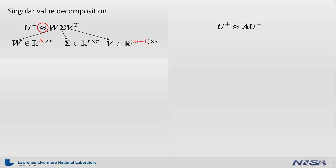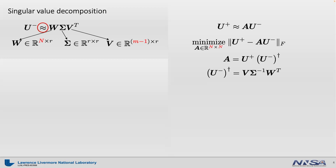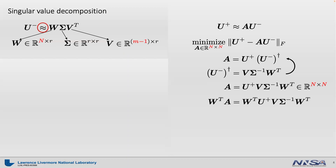Going back to the goal of DMD — that is, U-plus approximated by operator A times U-minus — we find operator A by solving the least squares problem. The solution is U-plus times the pseudo-inverse of U-minus. Since we have the truncated SVD of U-minus, the pseudo-inverse of U-minus is V times Sigma-inverse times W-transpose. Plugging this in, A equals U-plus times V times Sigma-inverse times W-transpose. Note that A is n by n, which can be a large-scale dense matrix, so we form a reduced matrix A by multiplying both sides by the projection matrix W-transpose from the left.